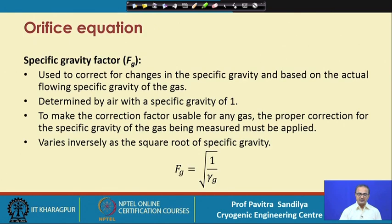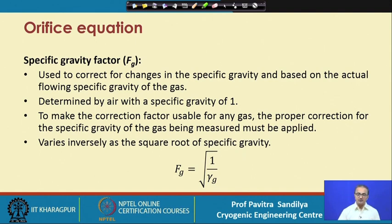The specific gravity factor corrects for changes in specific gravity, which can change due to changes in density as a function of temperature and pressure during flow. It is determined relative to air with a specific gravity of 1, and the correction is given as the square root of the inverse of the specific gravity.